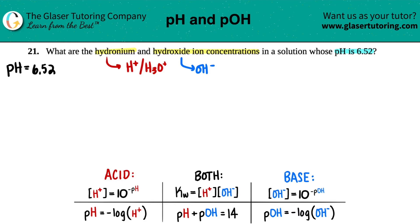So basically we only have one value. On a test or quiz, you'll run through in your head which equations you can use. In this case, there are only three equations that have the pH.